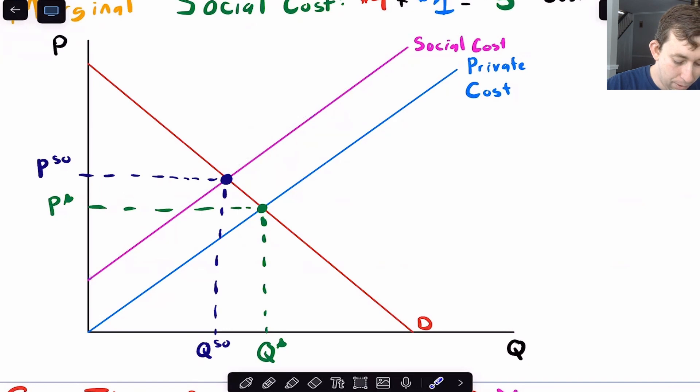And so if I think about where this social cost supply curve meets the demand curve, you can see that I'm going to have a lower quantity, which makes sense because if making electricity is polluting, probably don't want to make as much as just Bill thinks he should pump out,